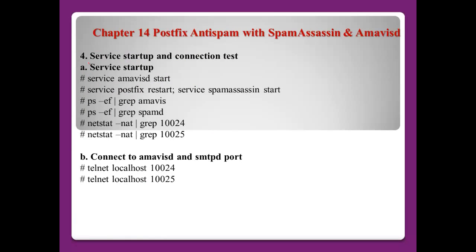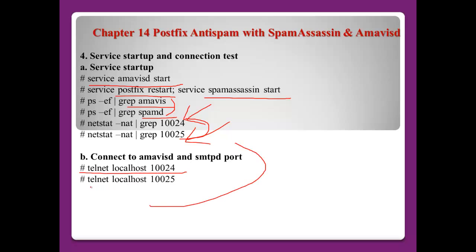To start the services, run: service amavisd start, then service postfix start, then service spamassassin start. Check the processes for amavisd and spamassassin, and check port numbers 10024 and 10025. If you want to test, connect to localhost port 10024 to see the amavisd-new service, and port 10025 which is the Postfix SMTP service.